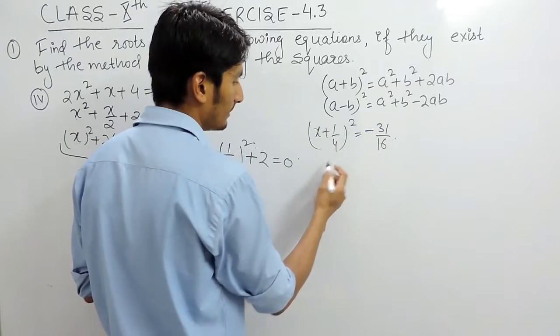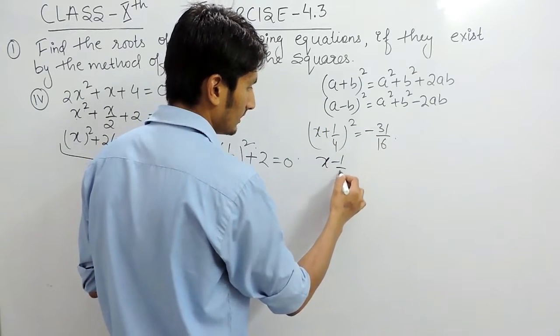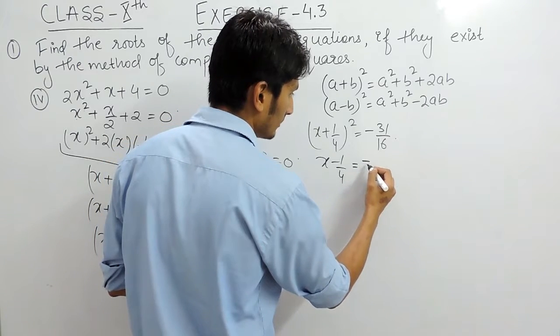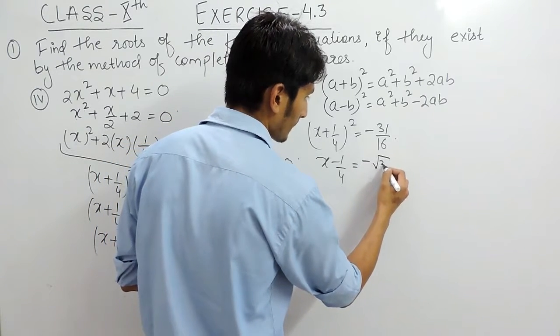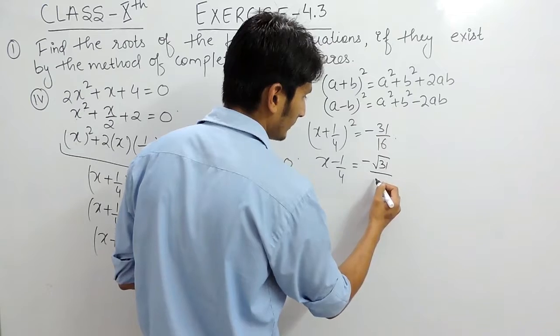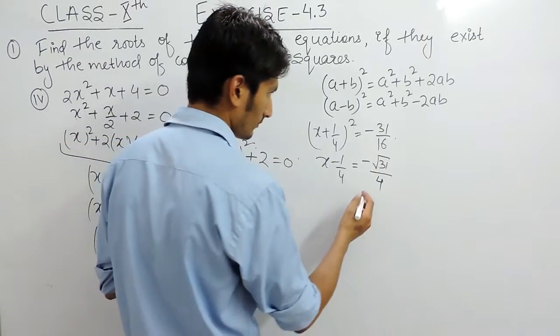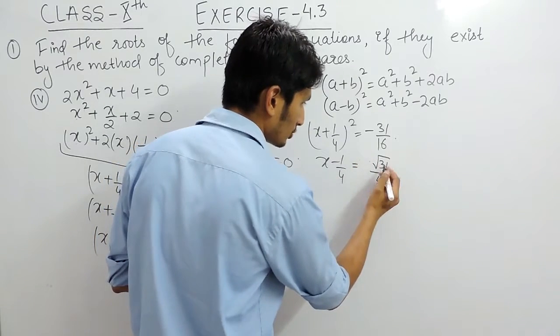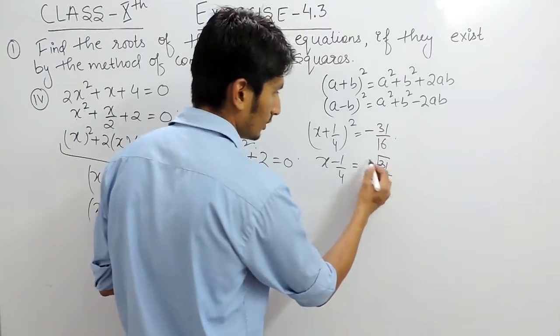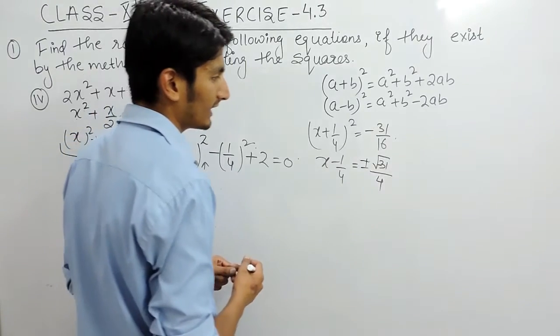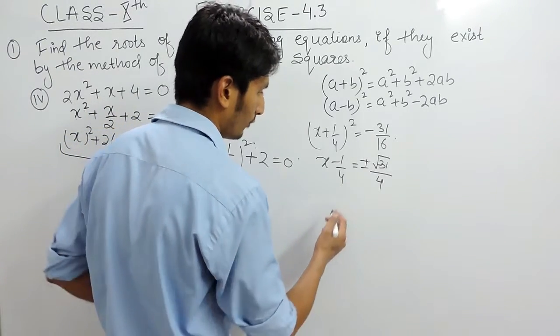square root and square can be cancelled. So this will be 1 upon 4 and the value of this will become minus 31 upon 4. This minus should be inside the bracket and the result must be positive or negative under root 31 upon 4.